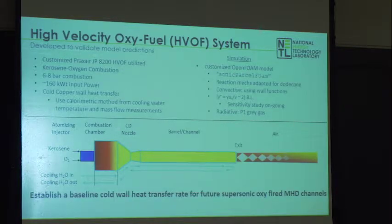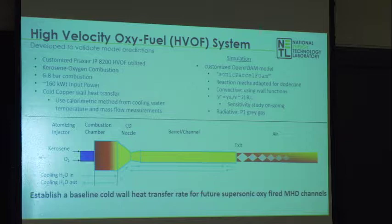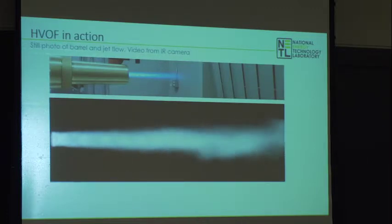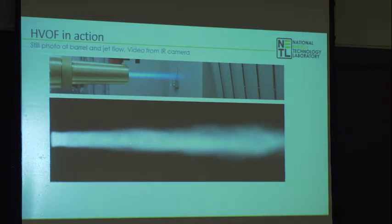We have built and started operating a high velocity oxyfuel combustor — it was actually a plasma spray gun that we bought and modified to achieve the conditions we wanted. People use these guns for spraying plasmas for surface coatings like thermal barrier coatings. We're currently studying the open jet at the end, where we would eventually put an MHD channel. You can see the barrel of the device; since it's a supersonic channel, you get shock diamonds — visible as stationary bright regions in the direct image of the flame.